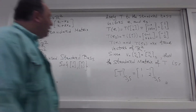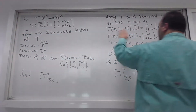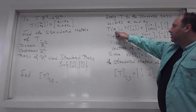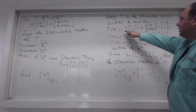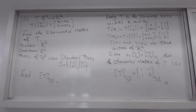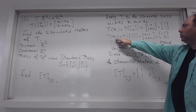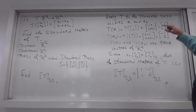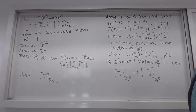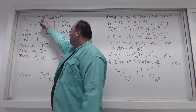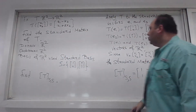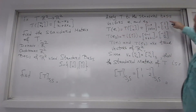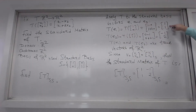To compute the standard matrix, as usual we apply the linear transformation to the basis vectors. We apply T to the first basis vector (1, 0) and get (1, 1), then apply T to the second basis vector and get (-1, 2). A linear transformation works on objects — it takes a vector from R2 and gives back a vector from R2. These two results are the true vectors of R2.